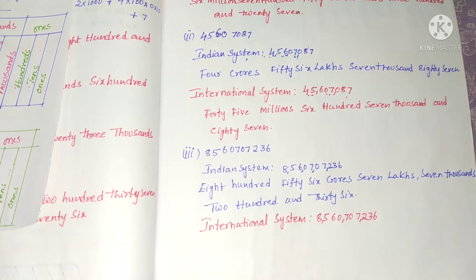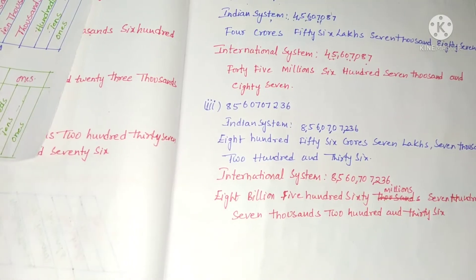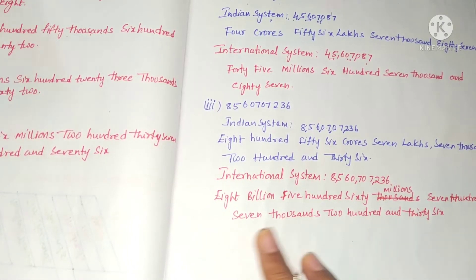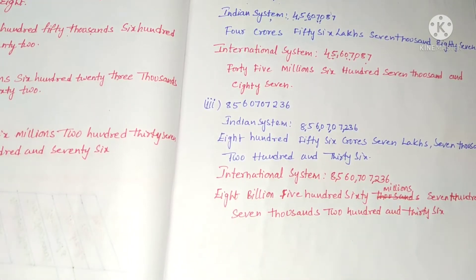In the international system, the periods are ones, thousands, millions, and billions. So the word form is: eight billions, five hundred sixty millions, seven hundred seven thousands, two hundred thirty-six.